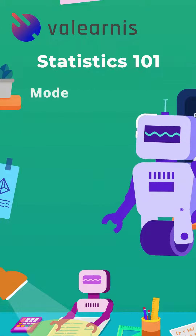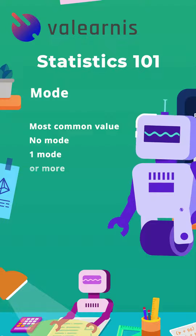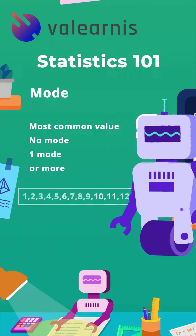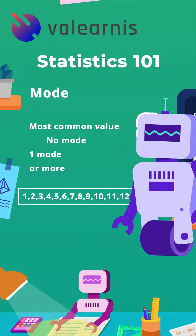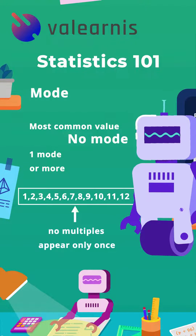The mode of a data set is the most common value. There may be no mode, one mode, or more. With our list from before, there is no mode since each value appears only once.